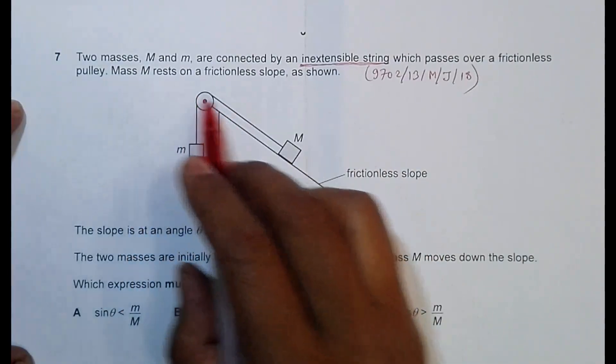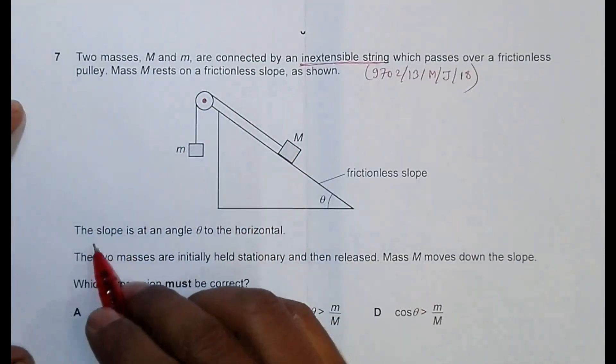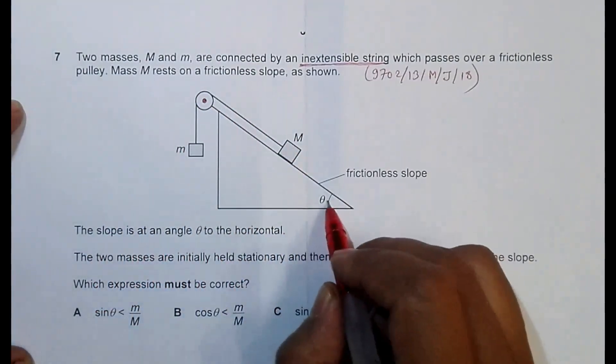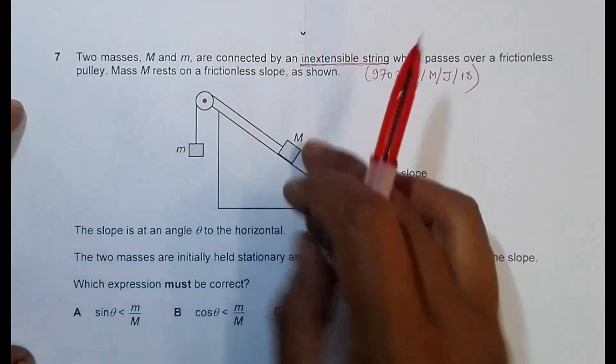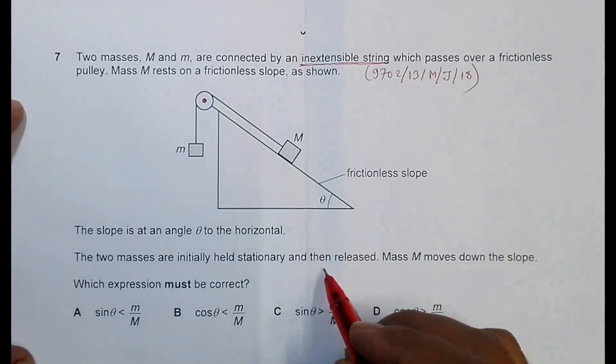The mass M rests on the frictionless slope. The slope is at an angle theta to the horizontal like this. The two masses are initially held stationary. So we hold this stationary and then released. And when it is released,